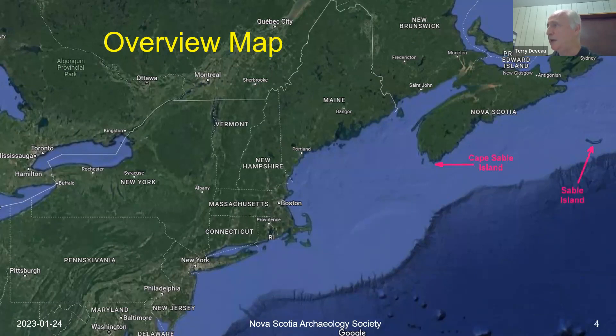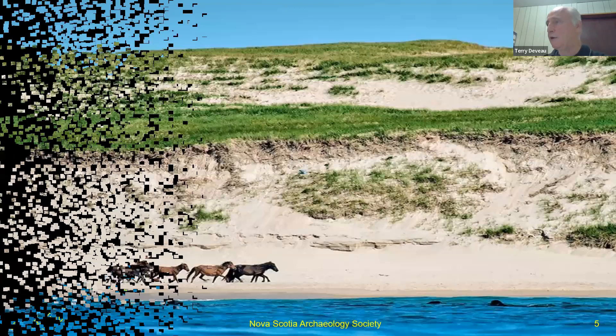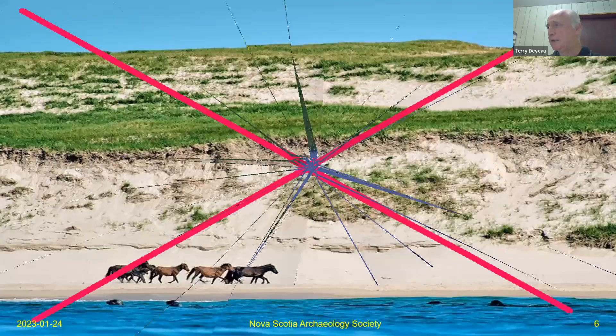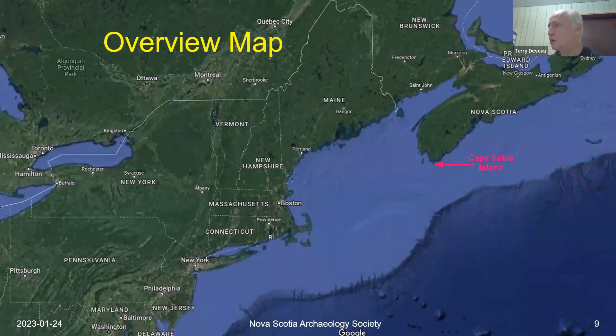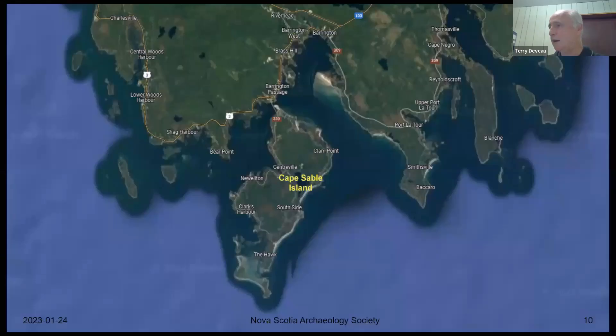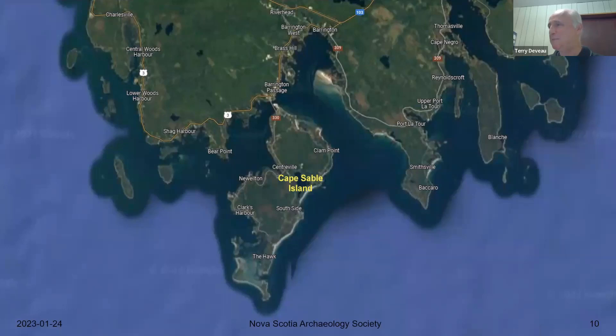Cape Sable Island can be confused with Sable Island, which is a completely different island in a completely different place. Sable Island is the place you might have heard of that has the sand dunes and the ponies. That's not what we're talking about tonight. Tonight we're talking about Cape Sable Island.